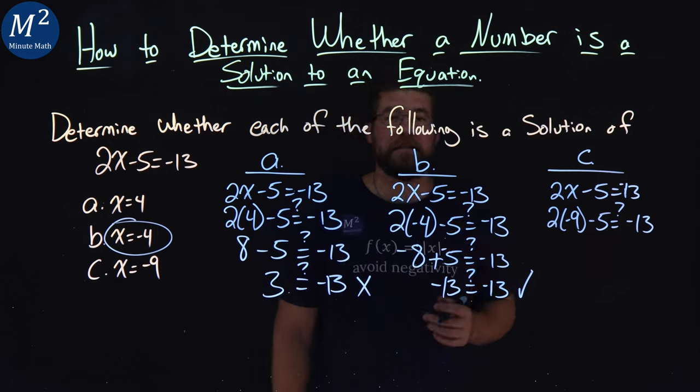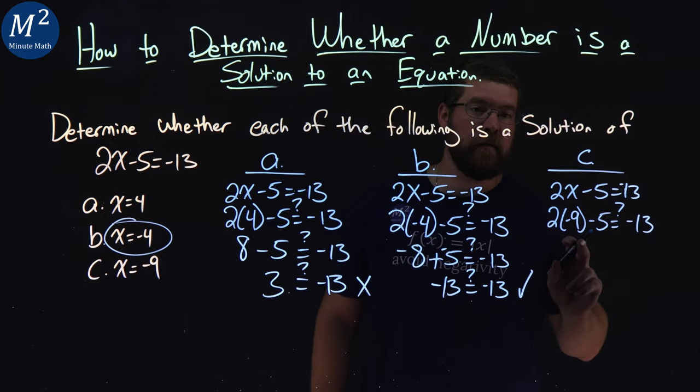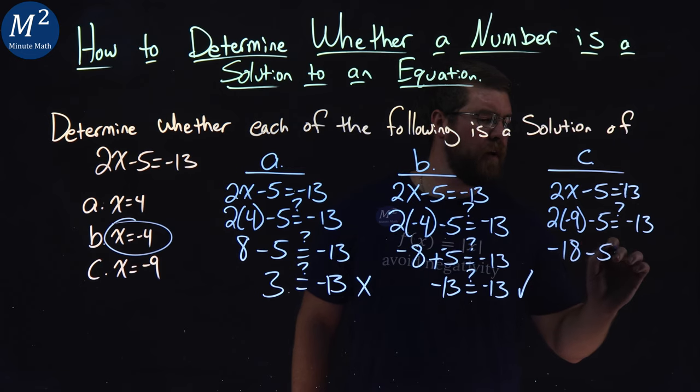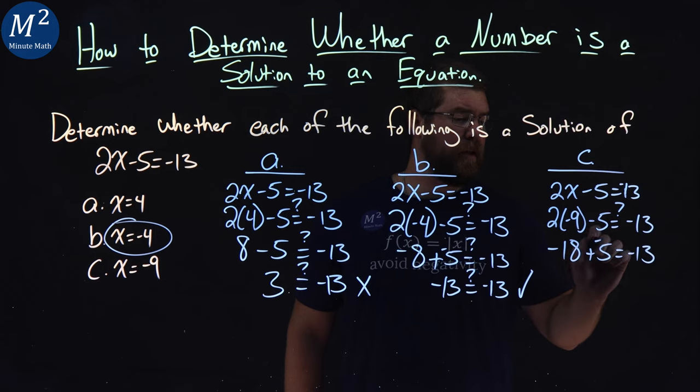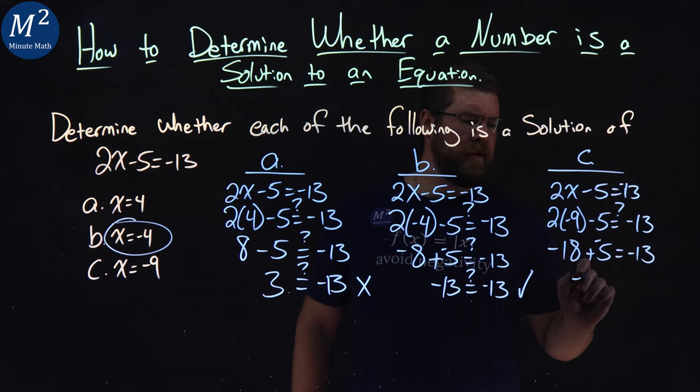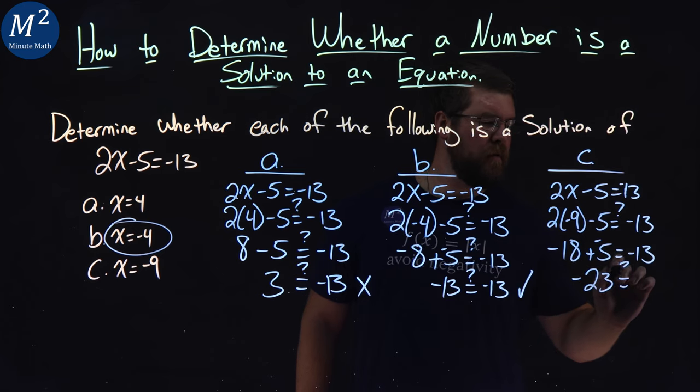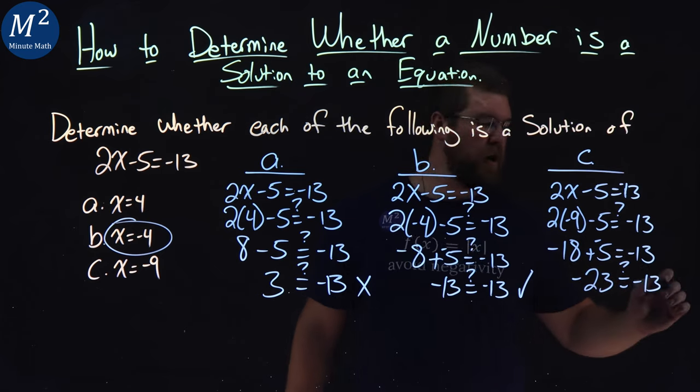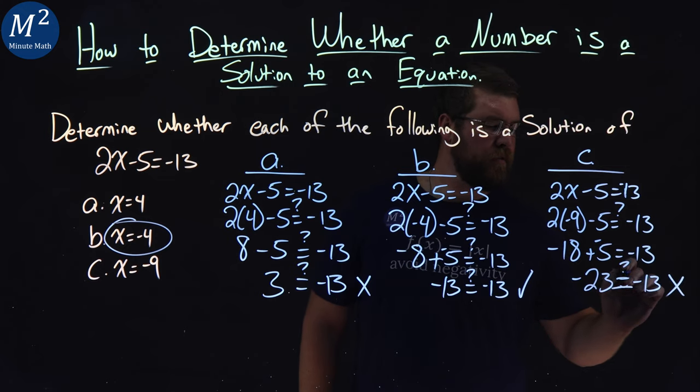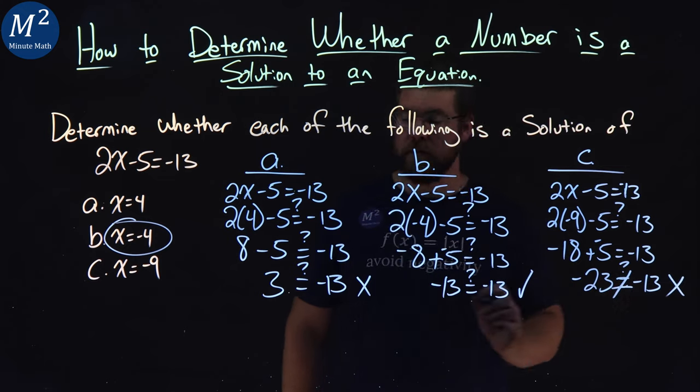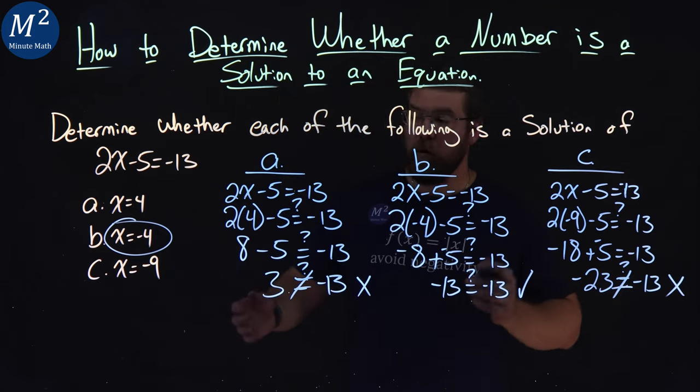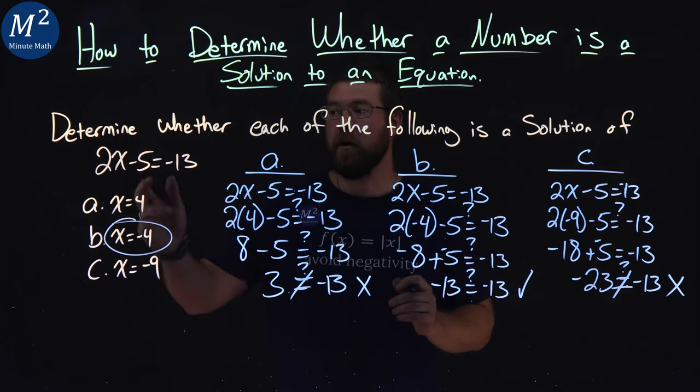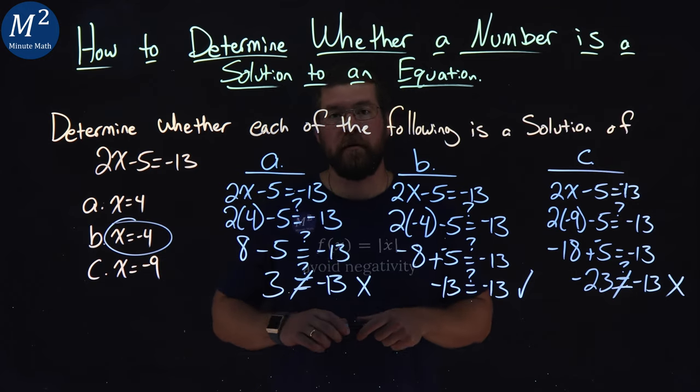Are the left and right-hand sides equal? Well, 2 times negative 9 is negative 18 minus 5 equals negative 13. Subtracting 5 is the same thing as adding negative 5. Negative 18 plus negative 5 comes out to be negative 23. Is that equal to negative 13? No, it doesn't. Sometimes you'll see a dash through the equal sign saying that they're not equal. So x equals negative 4 is the only solution to our equation, 2x minus 5 equals negative 13.